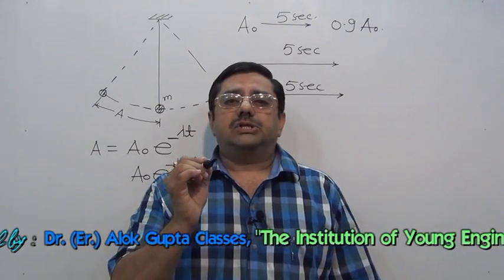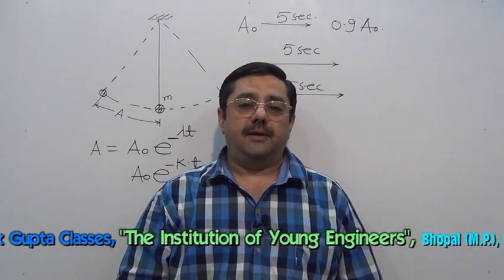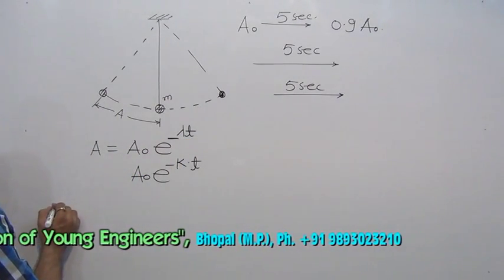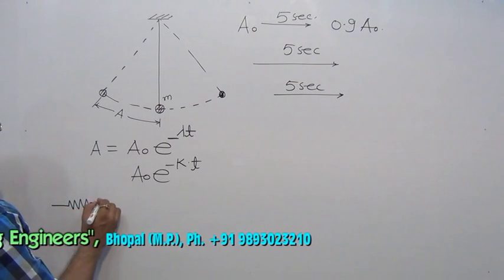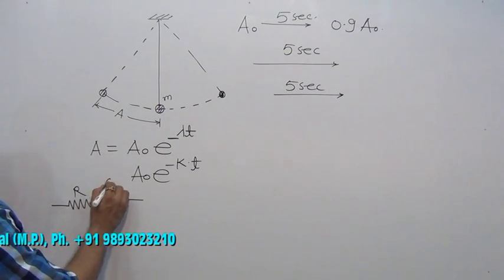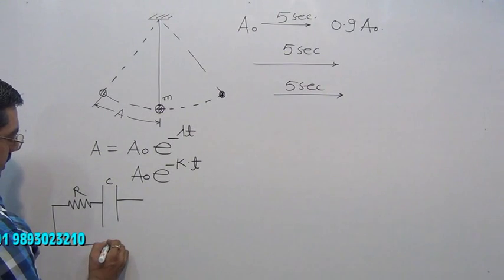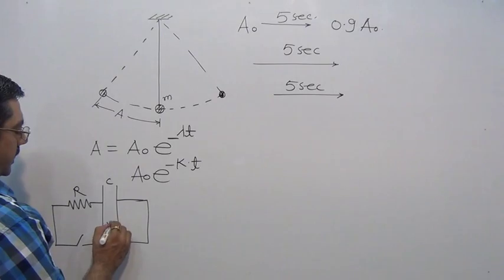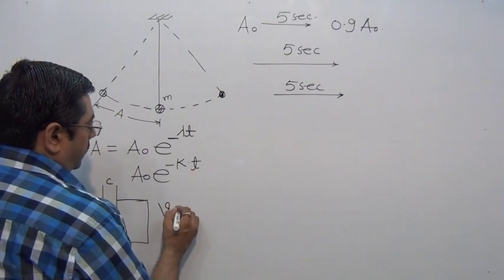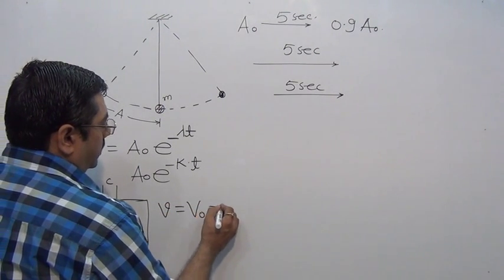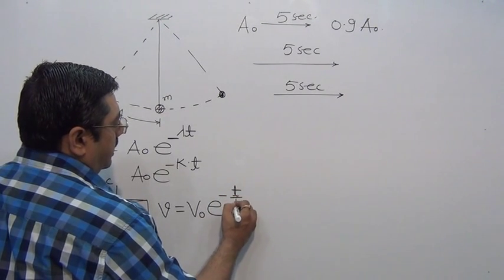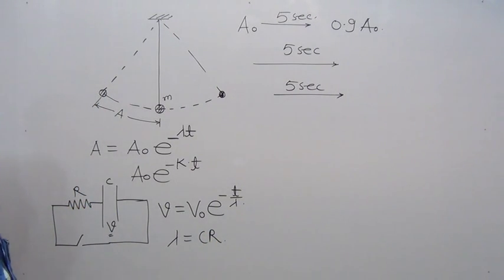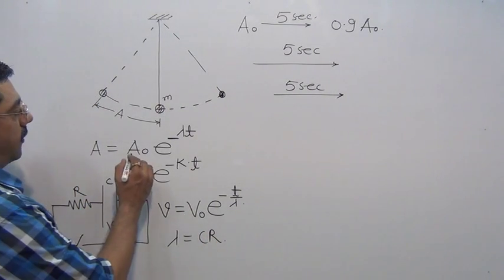This type of question in each chapter is the most important. One is in capacitors: a capacitor is allowed to discharge through certain resistance. When you short it, current will flow. The voltage across it has a formula: voltage equals V₀ e^(-T/λ), where λ is called discharging time constant.